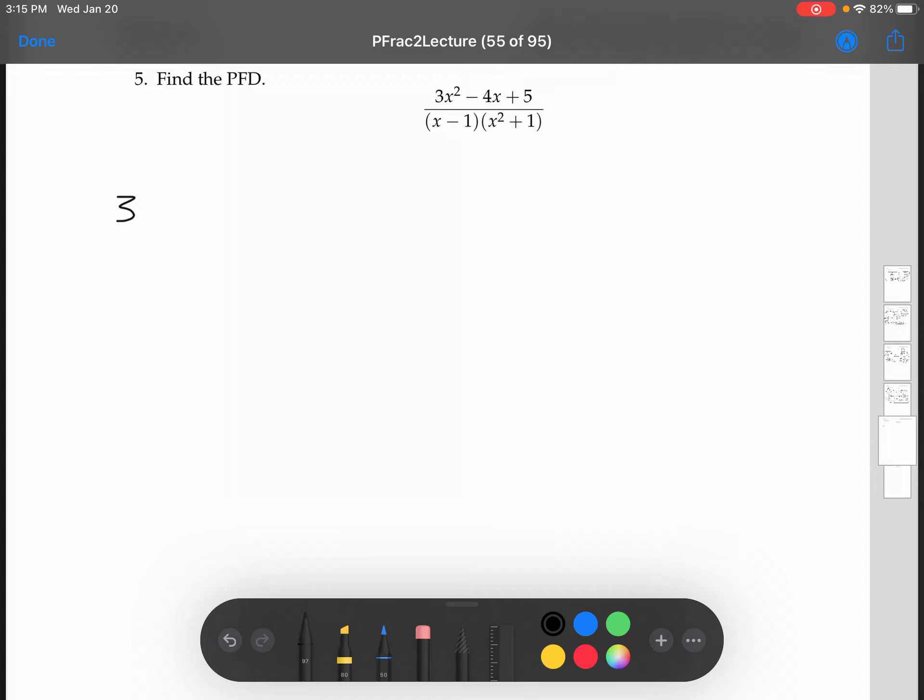We've got 3x squared minus 4x plus 5 over x minus 1 times x squared plus 1, equal to a over x minus 1. And for reasons that I've explained in earlier videos, we write this as bx plus c over x squared plus 1.